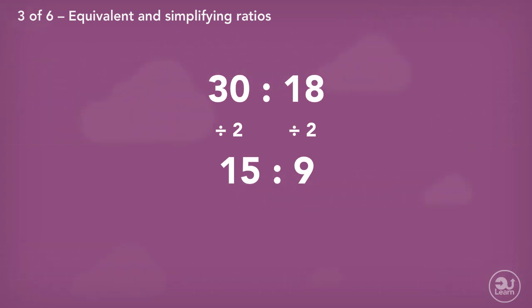We check our new answer to see if the values can be divided by another factor. The two values are on the three times tables, and so can be divided by three, giving us the ratio five to three.